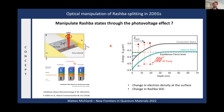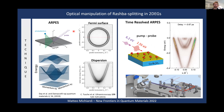Our instrument of choice is angle-resolved photoemission spectroscopy (ARPES), a photon-in, electron-out technique that gives direct evidence of the band structure. This is very appealing for us because we can directly look at a Rashba-split state — as shown here on experimental data from a gold 101 surface state — and see the splitting with our own eyes. Quantifying the Rashba spin-orbit coupling strength becomes very straightforward without disentangling it from other contributions as in a transport experiment.